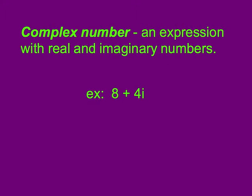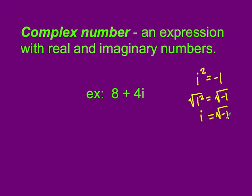Welcome back to our second part of lesson 3.3, where we're learning about complex numbers and how to use them. In yesterday's lesson, we talked about the imaginary number introduced by René Descartes. To review: if i squared is equal to negative 1, then the square root of i squared equals the square root of negative 1, or simply i equals the square root of negative 1. This puts into place a new kind of number in our system.